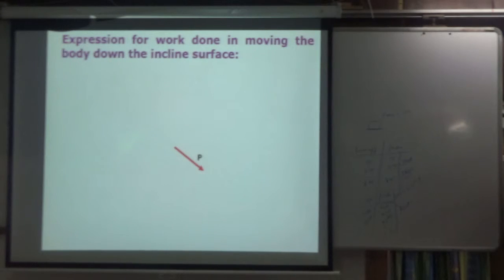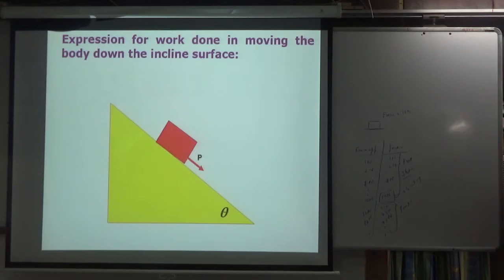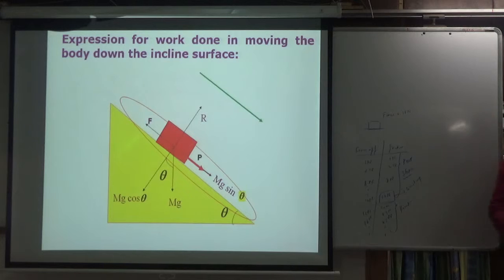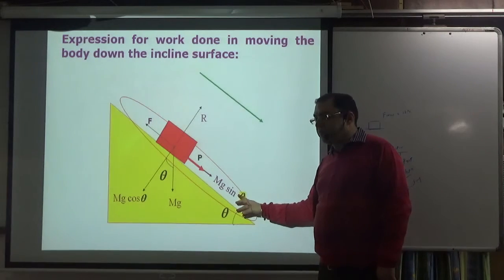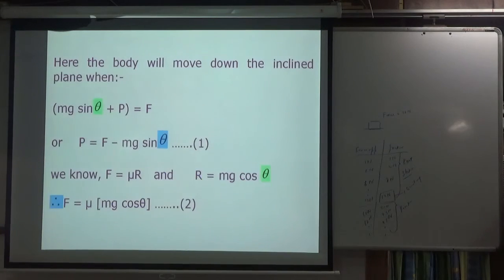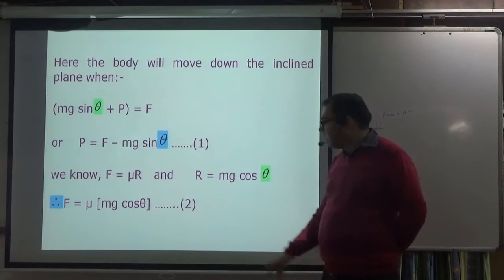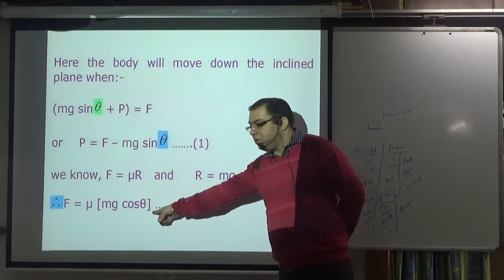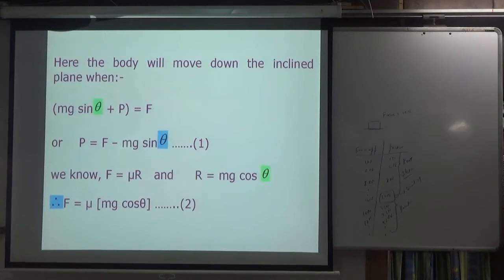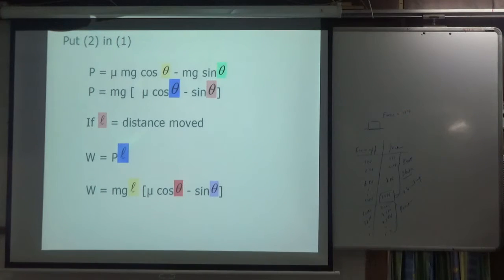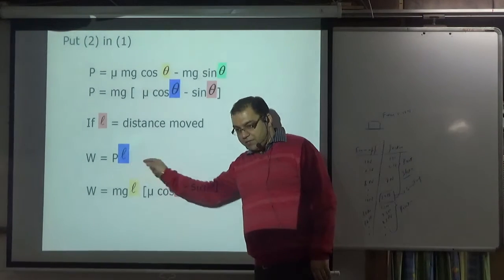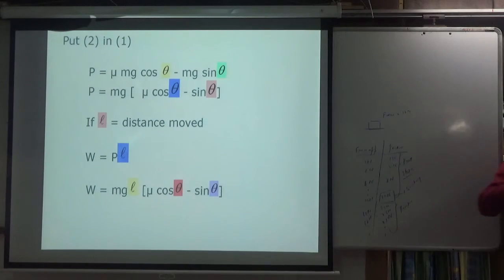For work done moving the body down the inclined surface: force P is applied downward, force of friction acts up the plane (opposing motion). Equating forces with zero acceleration: P + mg sin θ = F, so P = F − mg sin θ. Substituting F = μ × normal reaction and multiplying by displacement (length) gives the work done.